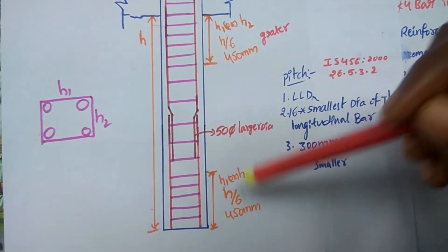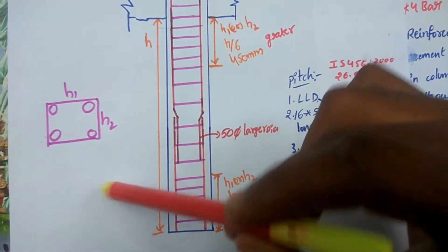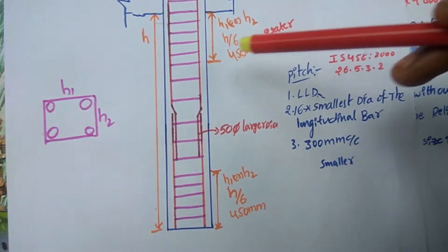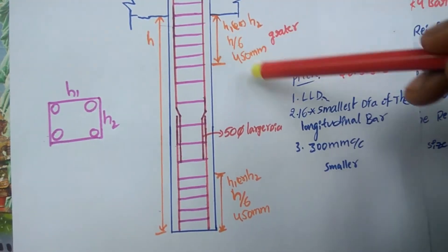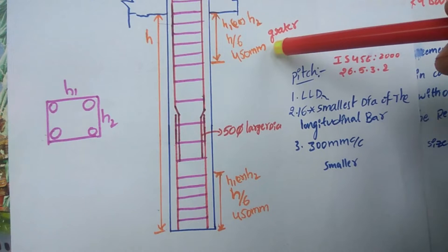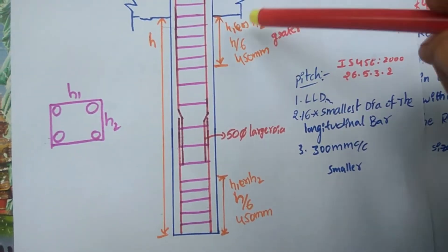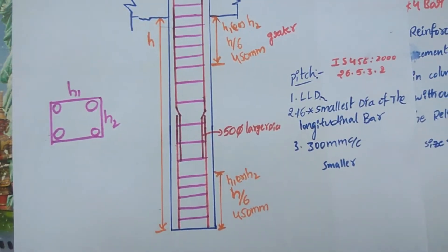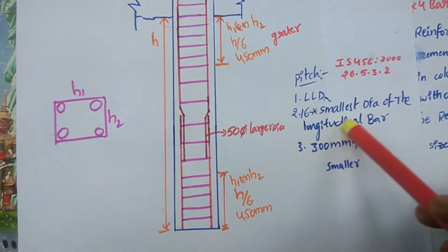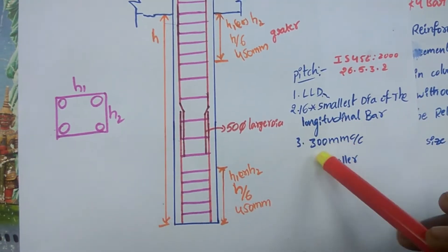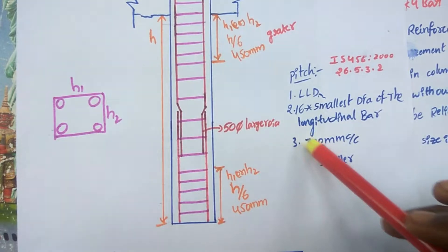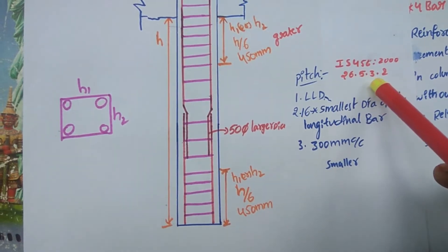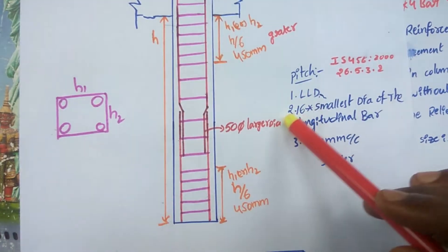This condition H1 or H2 refers to the cross section dimensions of the column, where H1 and H2 are the two sides and H is the total height. H by 6 or 450mm, whichever is greater, is used. The tie spacing is based on the least lateral dimension, 16 times the smallest diameter of the longitudinal bars, or 300mm center to center — whichever is smaller is used.